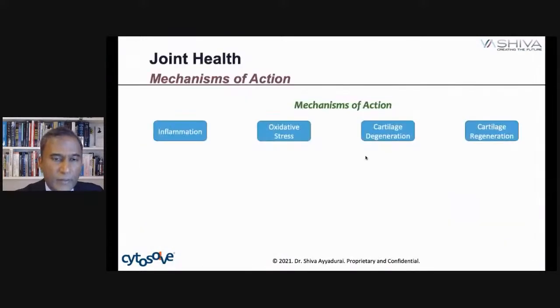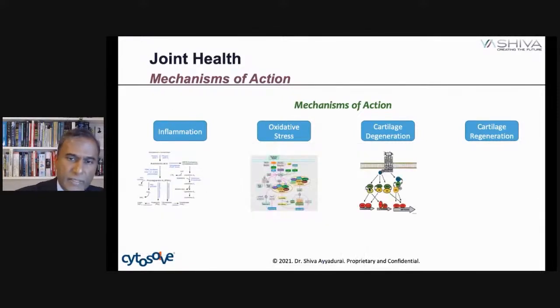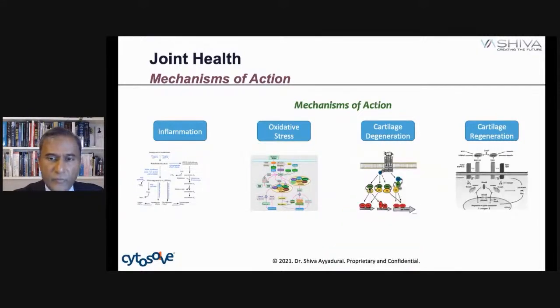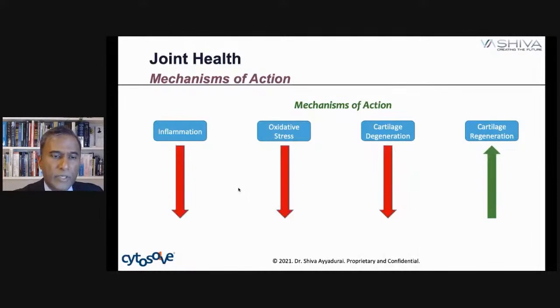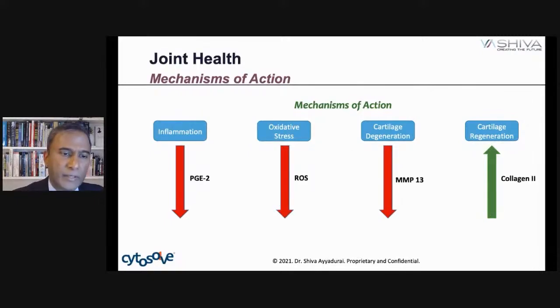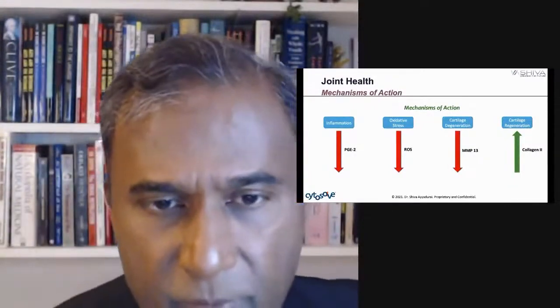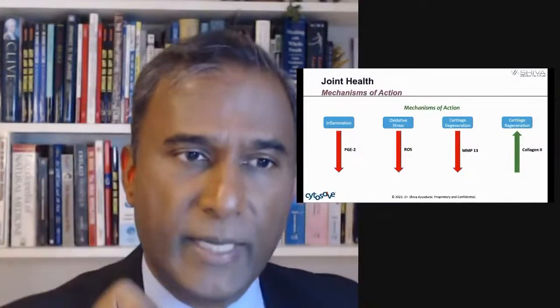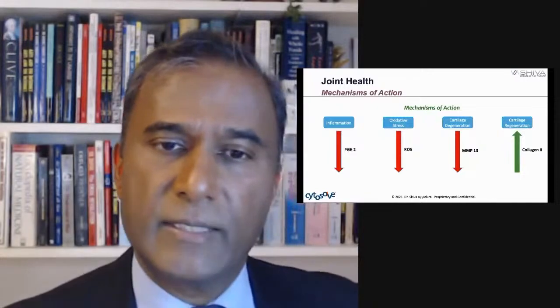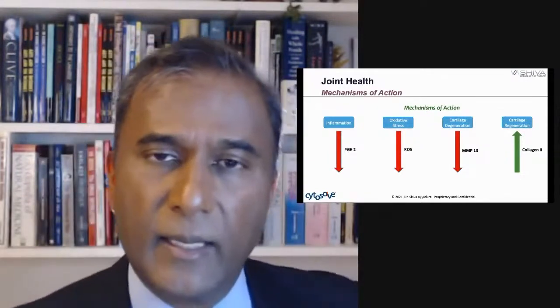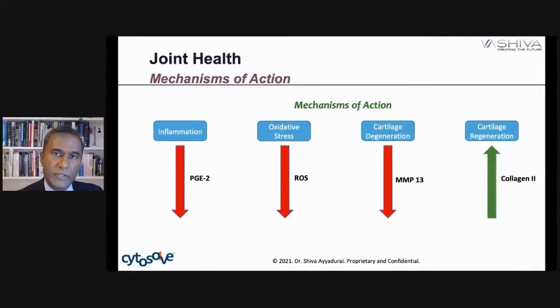Looking at joint health, there are four mechanisms of action: inflammation, oxidative stress, cartilage degeneration, and cartilage regeneration. For good joint health, you want inflammation to go down, oxidative stress to go down, cartilage degeneration to go down, and cartilage regeneration to increase. Each of these biomolecular phenomena has a chemical marker: PGE2 for inflammation, MMP-13 for cartilage degeneration, ROS (reactive oxygen species) for oxidative stress, and collagen II for regeneration. The first three you want to bring down and collagen you want to bring up. That's the strategy — an engineering systems approach.